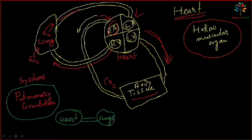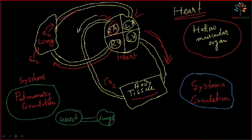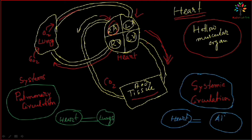And the other system is known as the systemic circulation. Systemic circulation means the circulation of blood between the heart and all the body tissue.